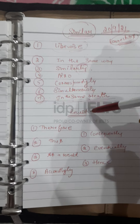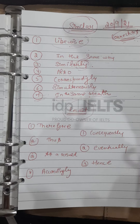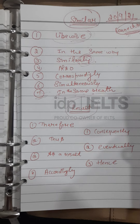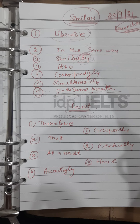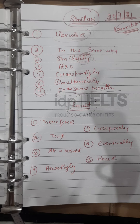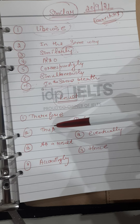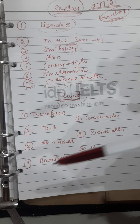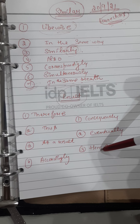Now let's move to the next type — that is 'result' connectors. When you need to show the result of a particular thing, you must indicate to the reader that you are moving to the result. You can use: therefore, thus, as a result, accordingly, consequently, eventually, and hence.